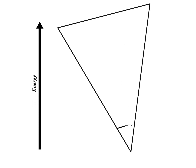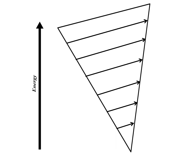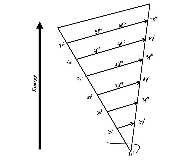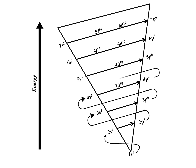Electrons are distributed from lower to higher energy orbitals. Those orbitals present at the bottom of the diagram have lower energy, and those present higher up have higher energy. This is how electrons are distributed using the energy level diagram.